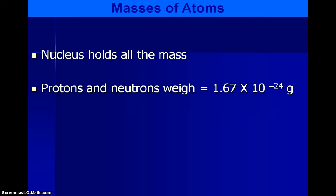So protons and neutrons actually weigh 1.67 times 10 to the negative 24th grams, which is really, really tiny. This is the value of one atomic mass unit.